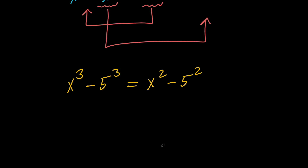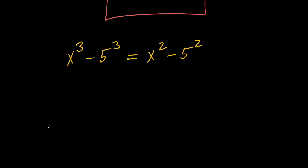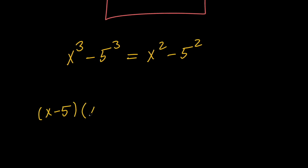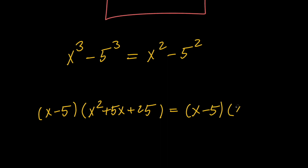That's really nice because we can factor both sides. If we do that, we're going to have x minus 5 times x squared plus 5x plus 25 on the left hand side, and we're going to have x minus 5 times x plus 5 on the right hand side.